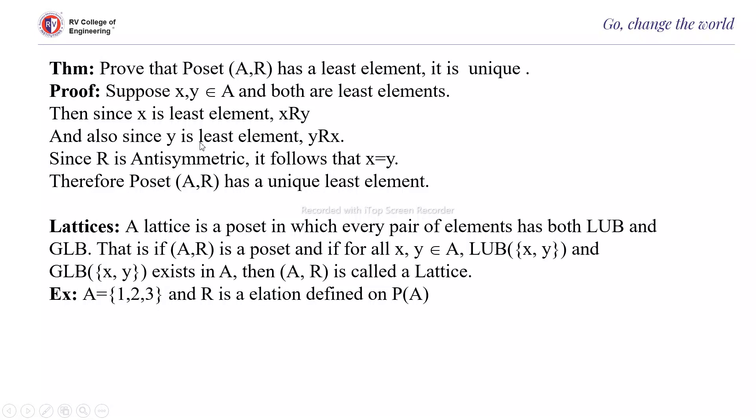Suppose if you have multiple least elements, then we will prove by contradiction. Then since x is the least element, xRy. And since y is the least element, yRx. And since R is antisymmetric, because we know that poset is having a feature of antisymmetric, it follows that x = y. Therefore, poset has a unique least element.